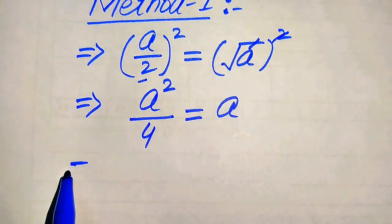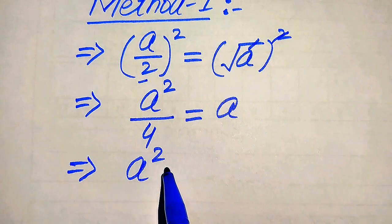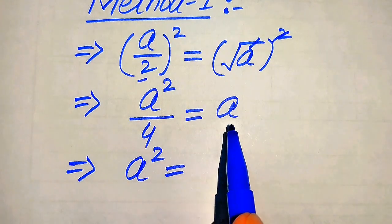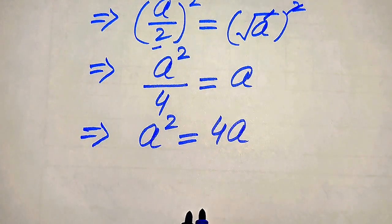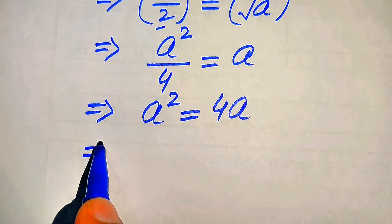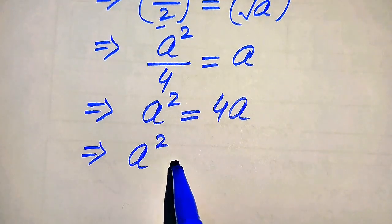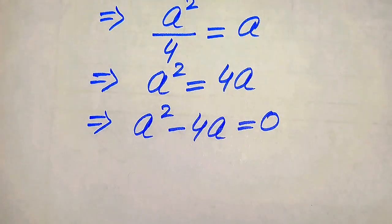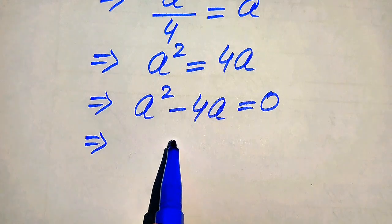In the next steps we rearrange the terms. We move the 4 to the right-hand side, giving a² equals 4a. You can see this is a quadratic equation, but not yet in standard form. So we move 4a to the left-hand side, giving a² minus 4a equals 0.